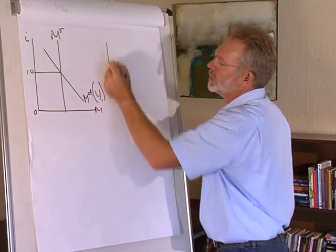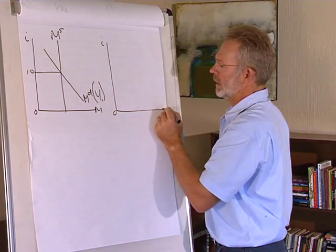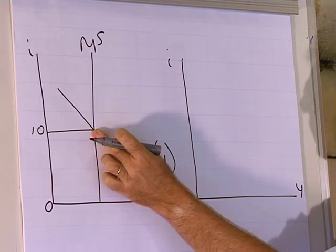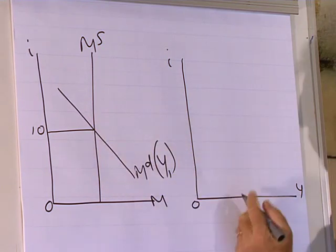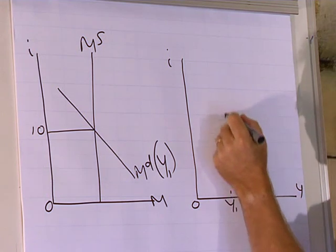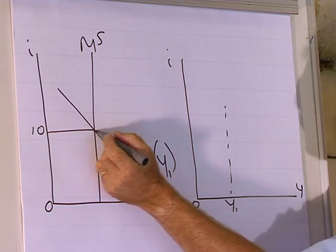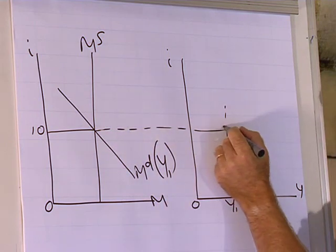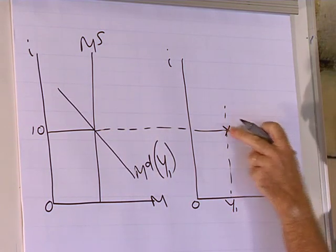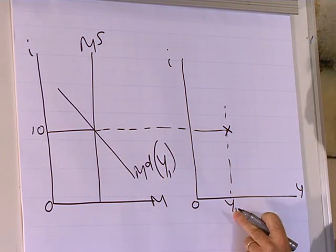The LM curve shows different combinations of interest rate and income where the financial market is in equilibrium. In other words, at Y1, the financial market is in equilibrium at interest rate 10%. So this point represents the point where the financial market is in equilibrium given an output level Y1.